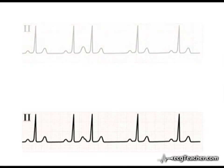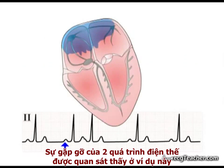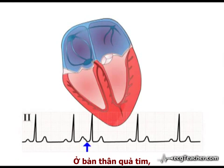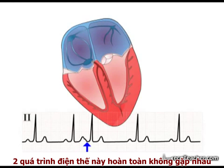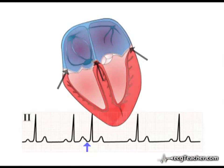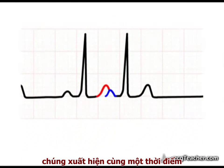Note that the fusion of the waves observed in the example used here is purely an electrocardiographic phenomenon. In the heart itself, the waves do not meet, as they are separated by the atrioventricular septum. They fuse on the ECG readout simply because they occur at the same time.